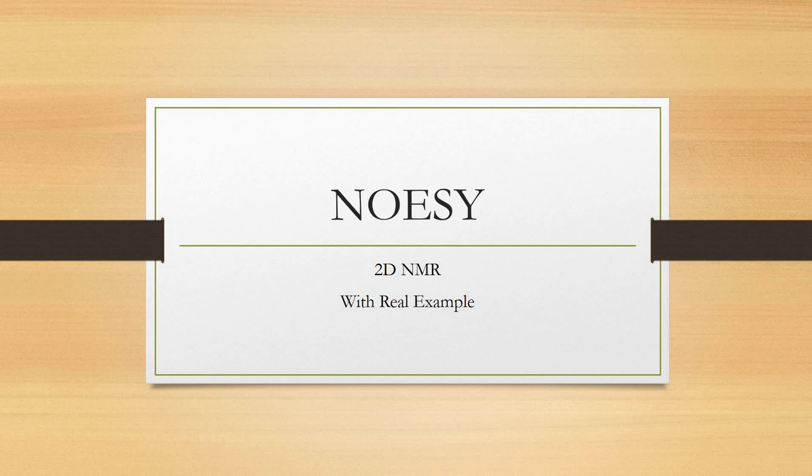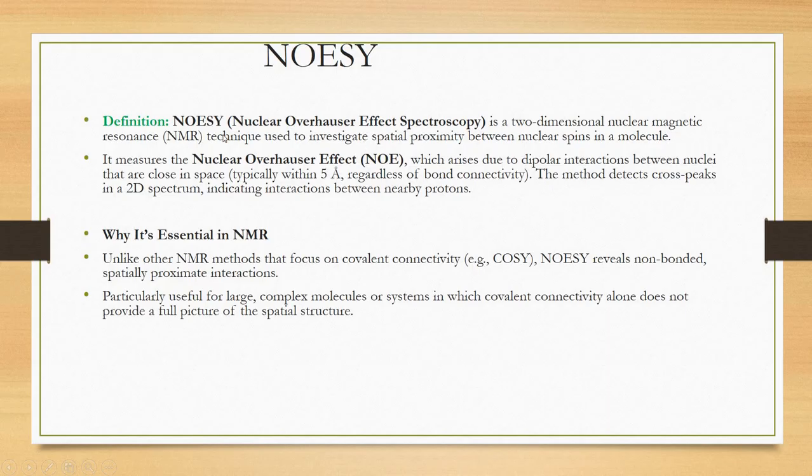Hello everyone, today we are going to discuss NOESY 2D NMR with a real example. NOESY, or Nuclear Overhauser Effect Spectroscopy, is a two-dimensional nuclear magnetic resonance technique used to investigate spatial proximity between nuclear spins in a molecule.